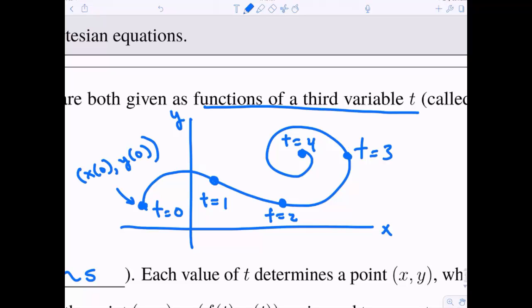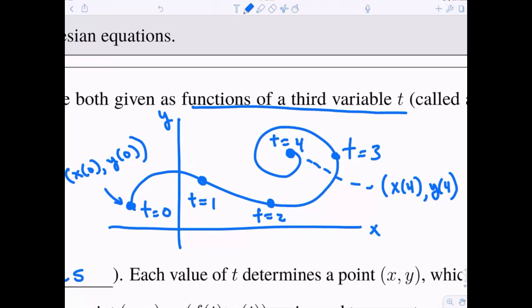So this is the x value at 0 and the y value at 0. Sometimes you also say f of 0 and g of 0. And then over here at 4, that was our terminal point. This is the x value at 4. And then we have the y value at 4.